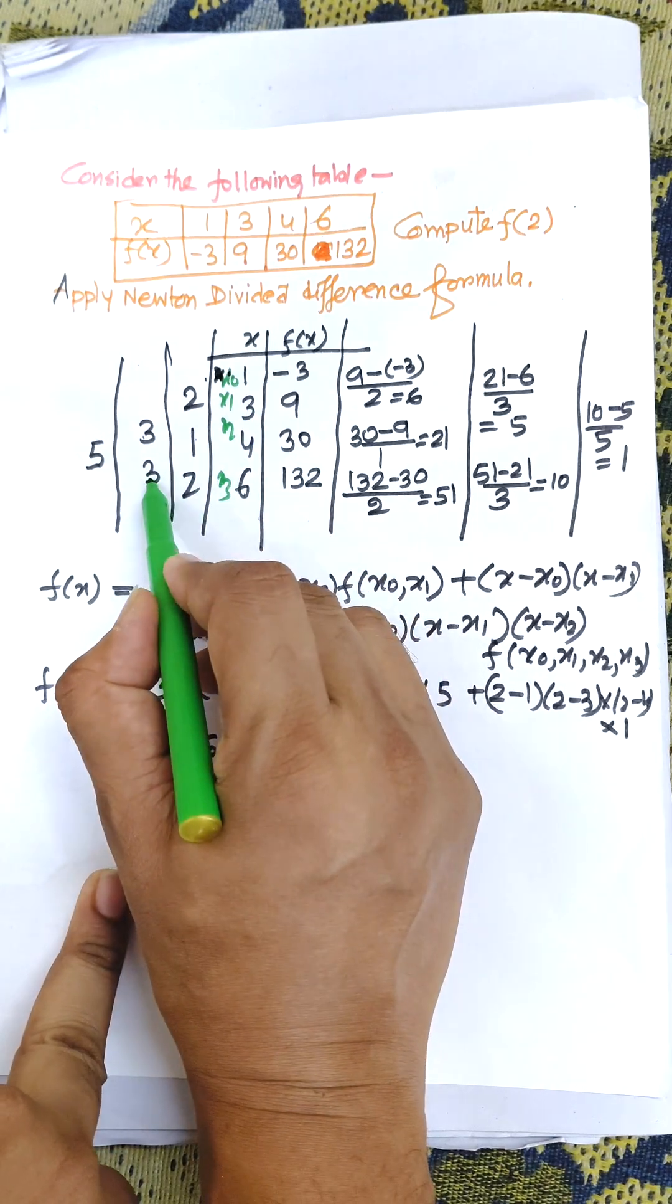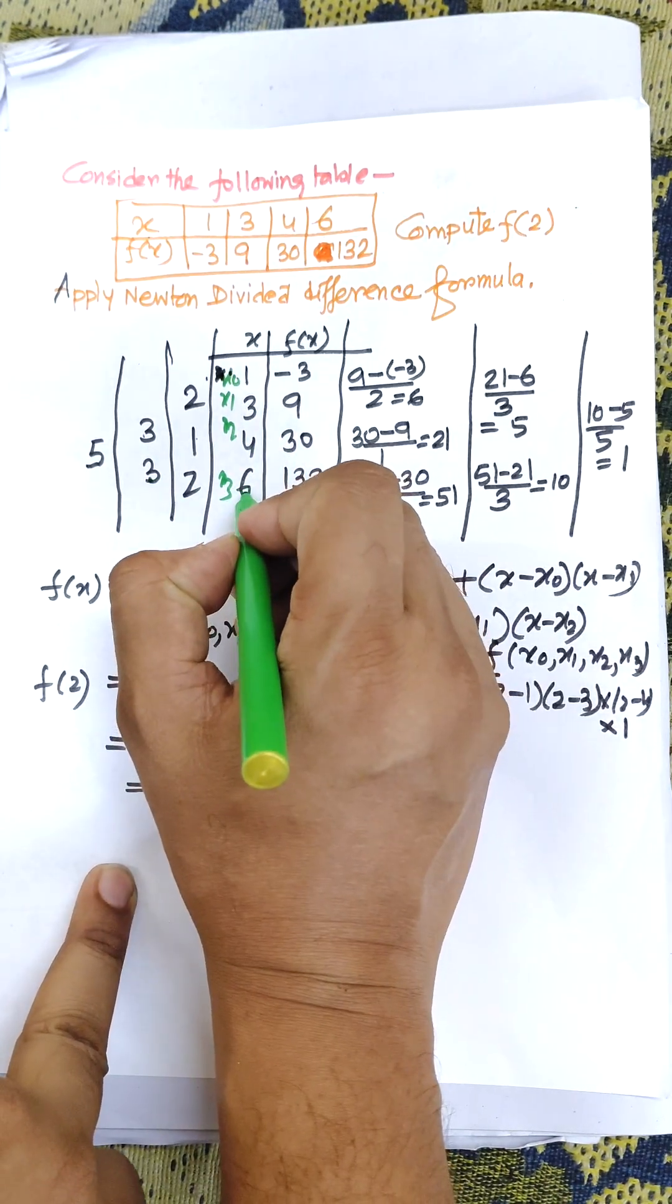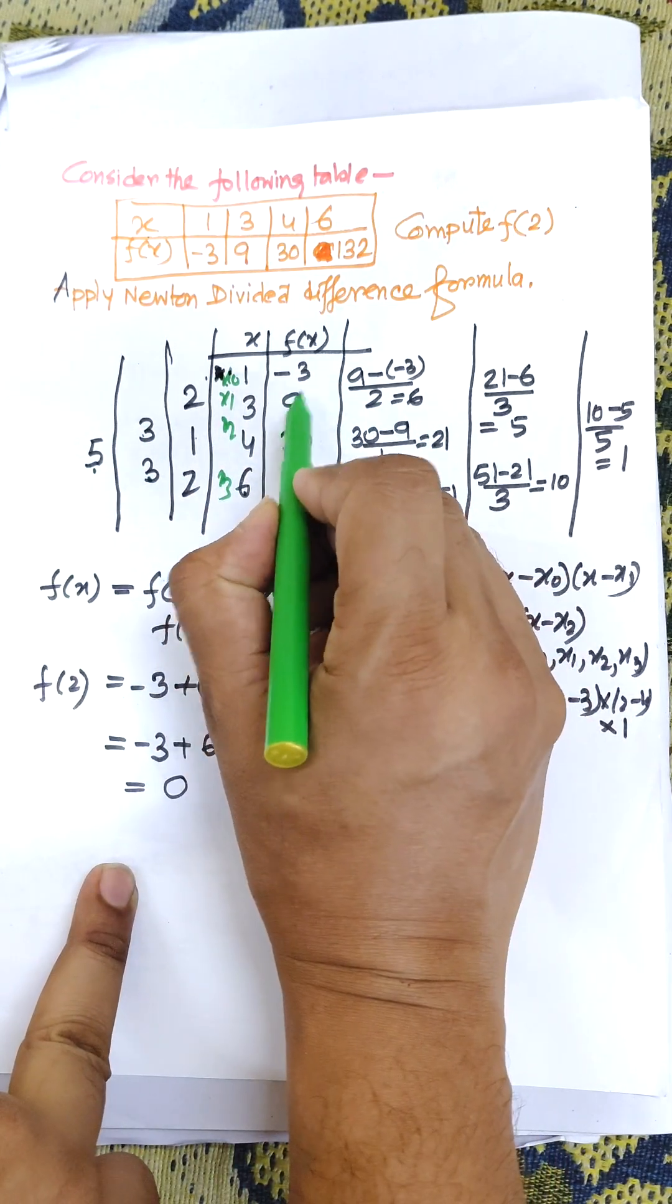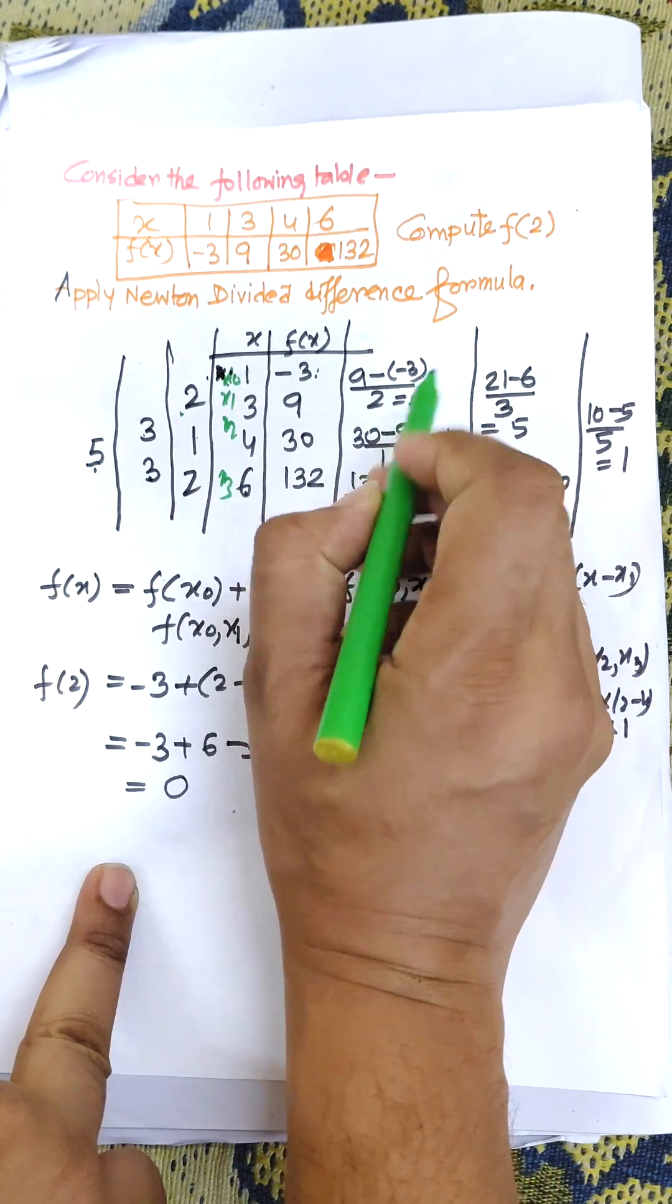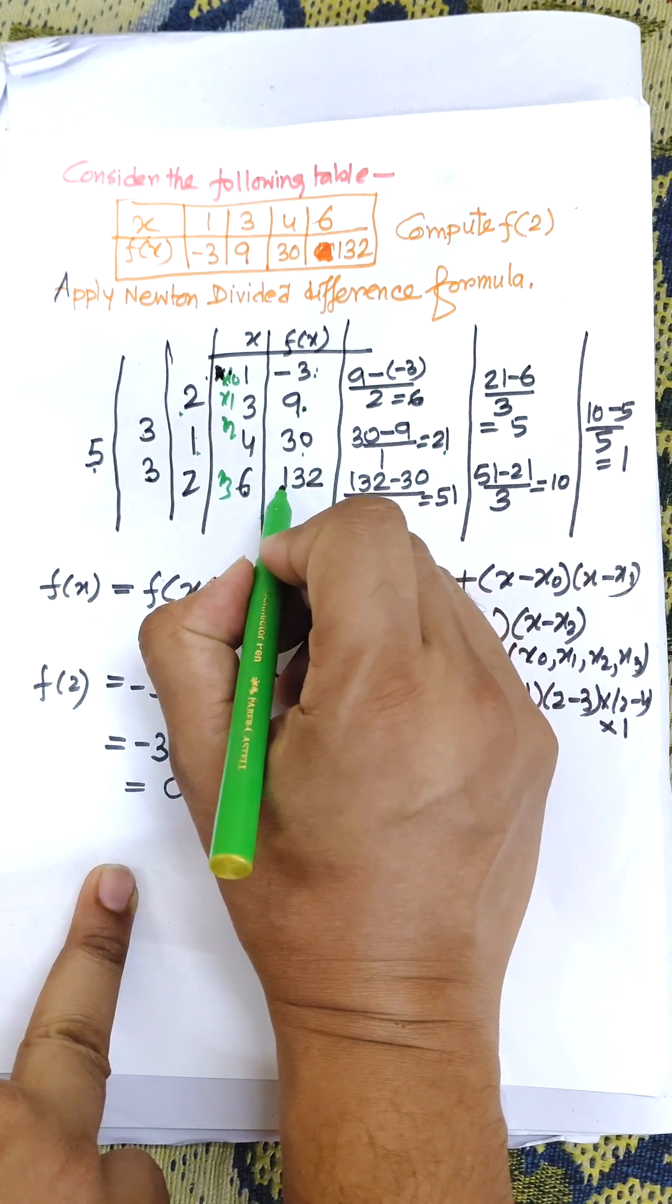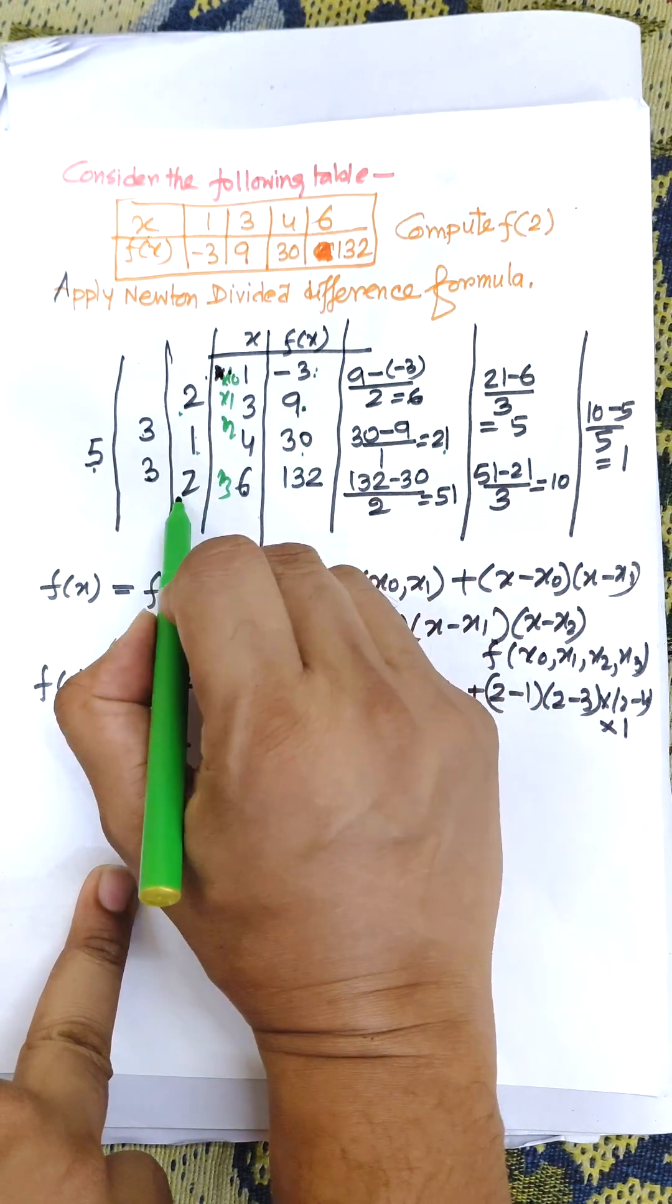Finally, x3 minus x0 is 5. Now, 9 minus -3 divided by 2 equals 6. 30 minus 9 divided by 1 equals 21. 132 minus 30 divided by 2 equals 51.